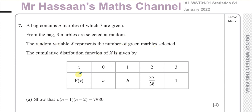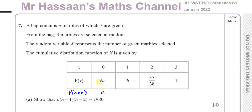What they're giving us here is a cumulative distribution function of X, which is not the same as a probability distribution. If this was a probability distribution, you'd say the probability that X equals x.